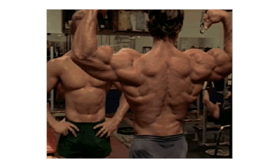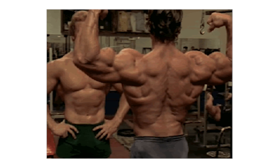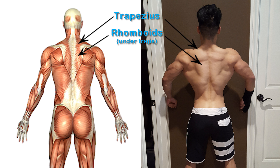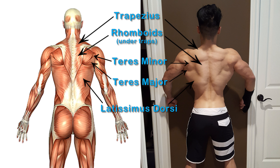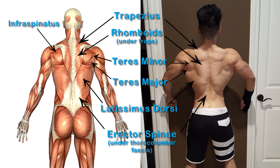Let's take a look at your back. The back is composed of the trapezius, the rhomboids, the teres minor, the teres major, the latissimus dorsi, and the erector spinae.